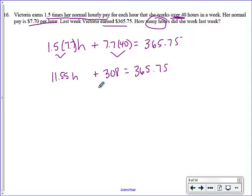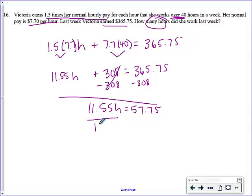308 equals 365.75 plus, what's this? Yes. What is it? 11.55. 11.55? Yeah. Okay, so now what would you do? Subtract 308 from both sides. So I have 11.55 H equals, what's this give me? 57.75. 57.75. Now what? Divide by 11.55. So what does that give me? H equals?